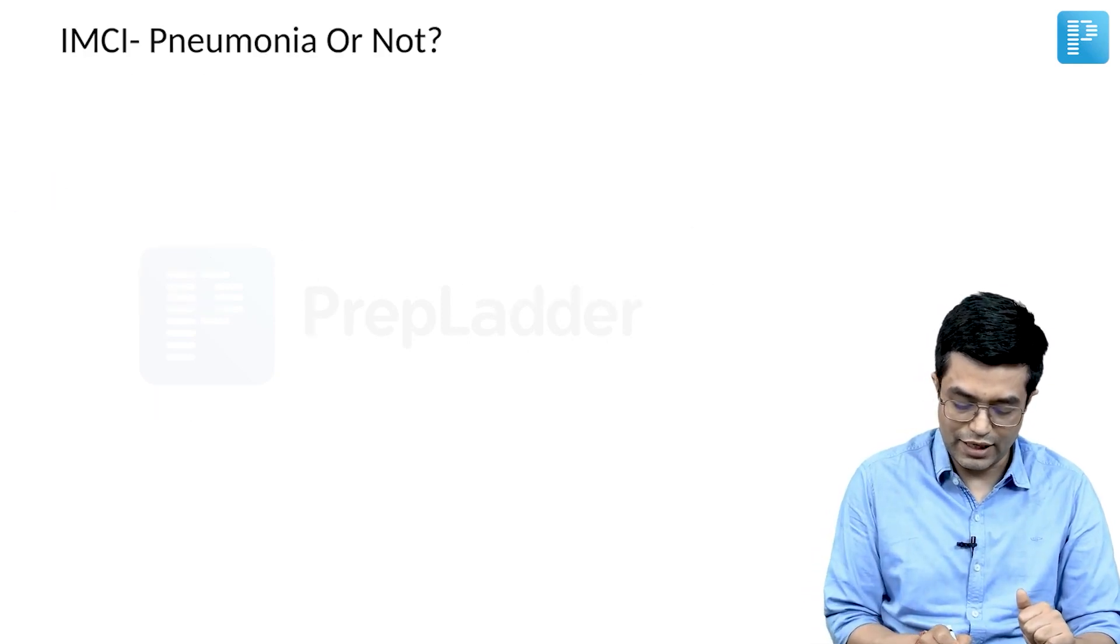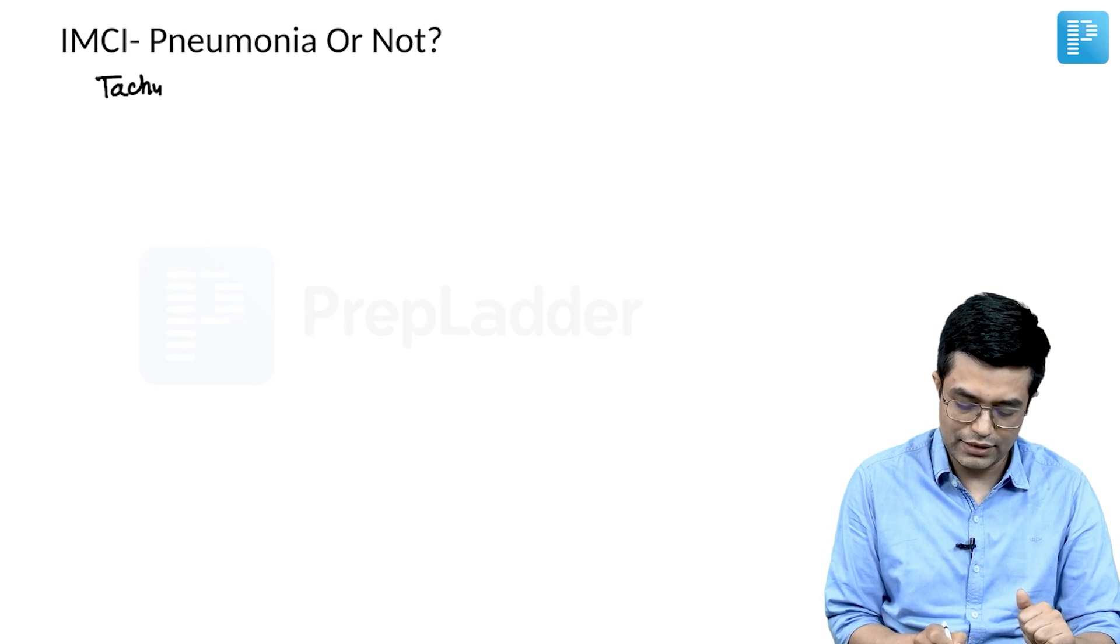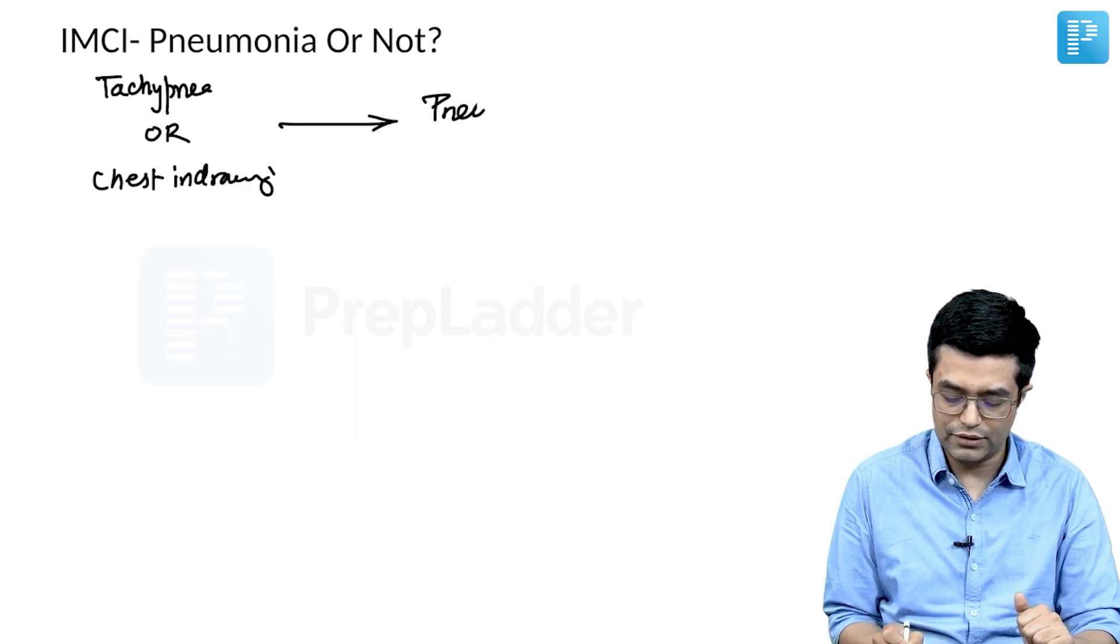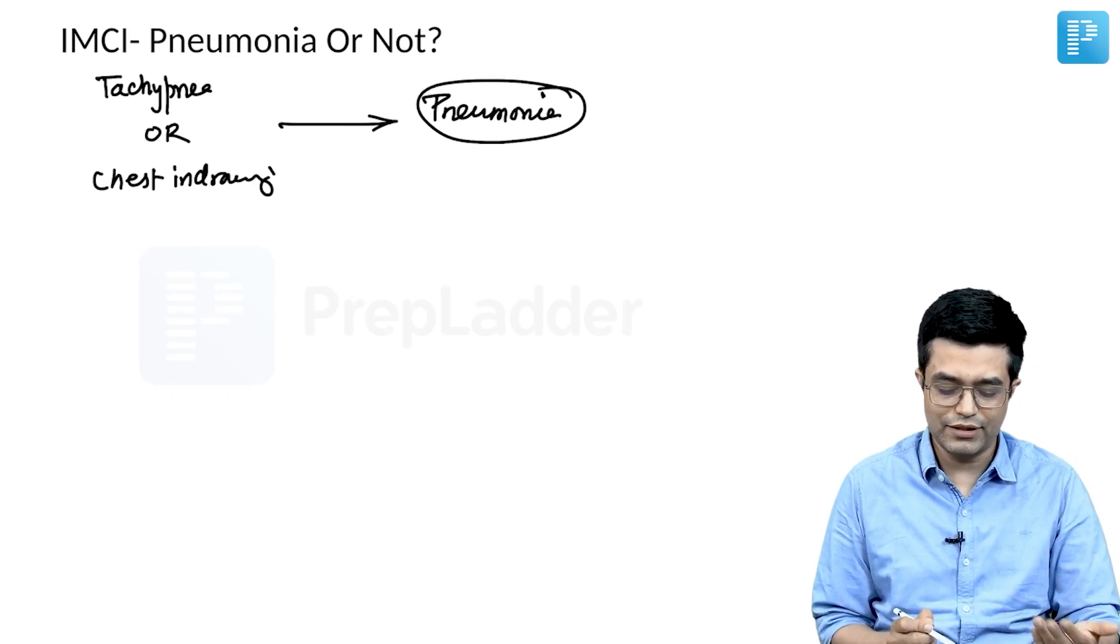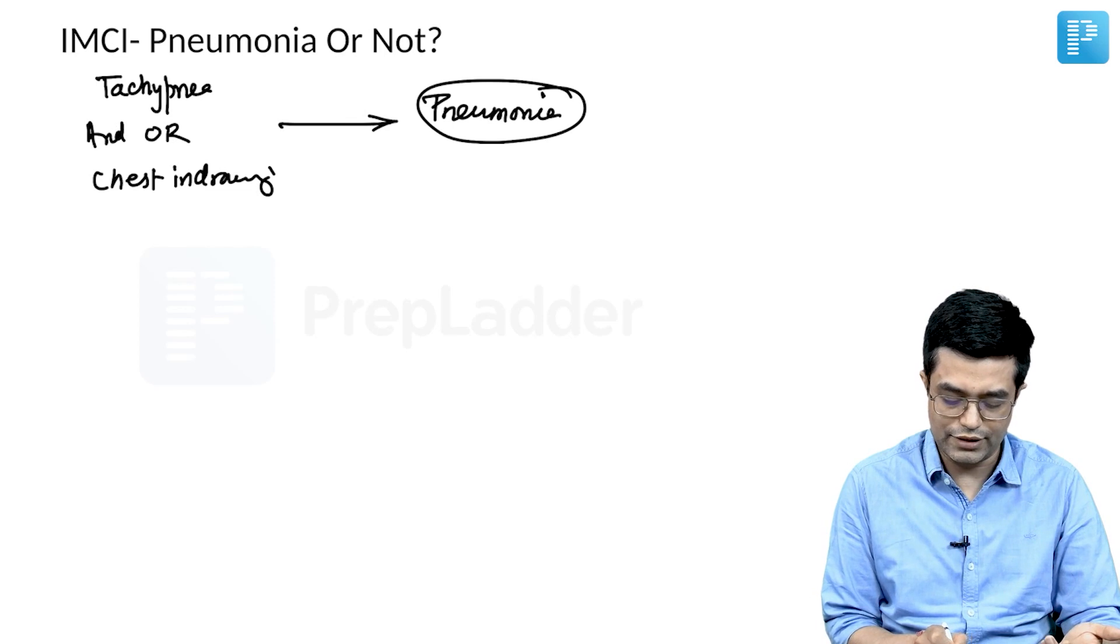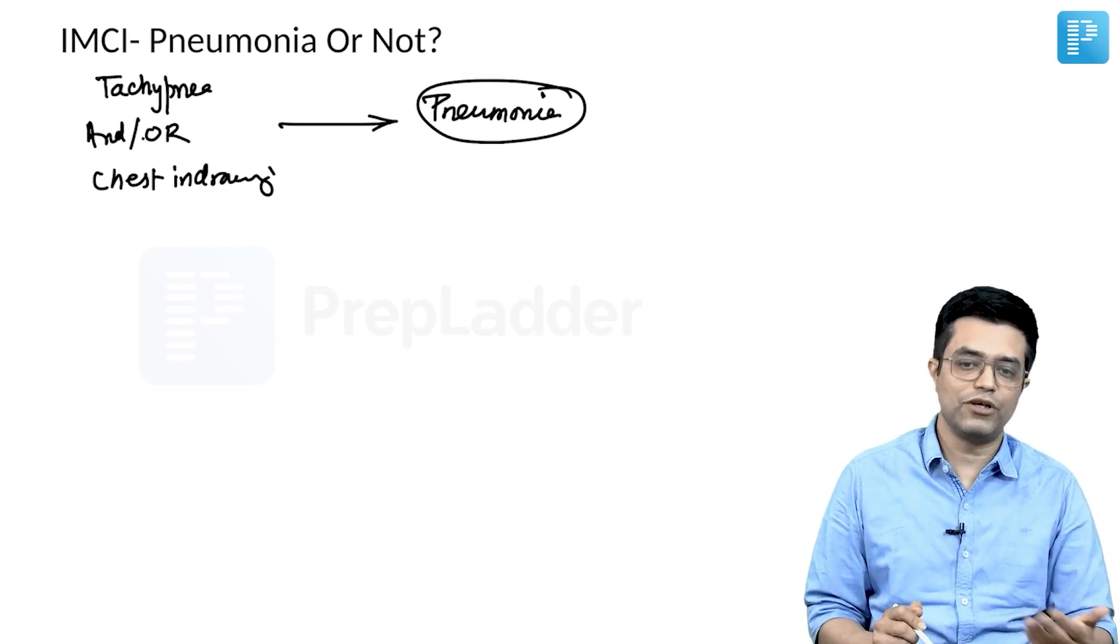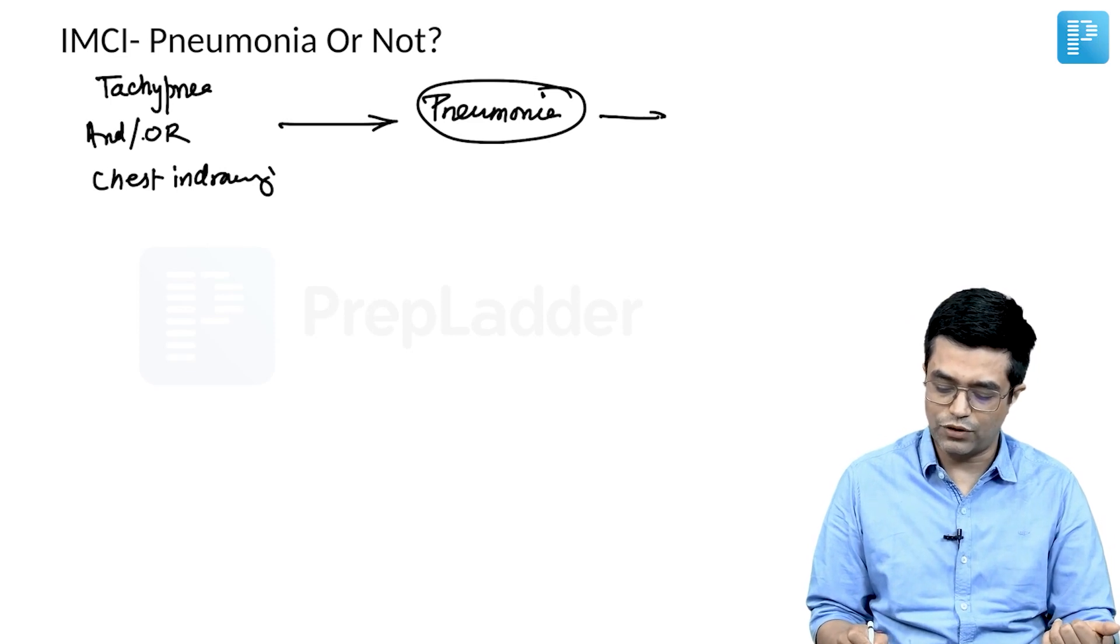Remember, whenever the child is having either tachypnea or chest indrawing, the child will be labeled as compatible with pneumonia. Also, if the chest indrawing is present, and the word here is an 'or', in case the chest indrawing alone is present, we say chest indrawing pneumonia. These are the children who will require oral antibiotics like oral amoxicillin.